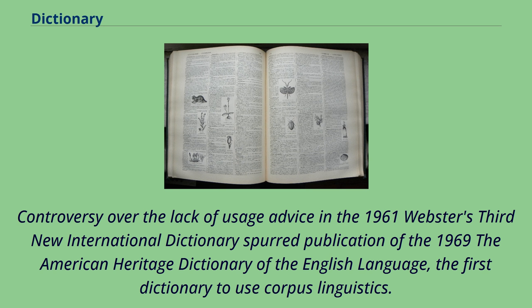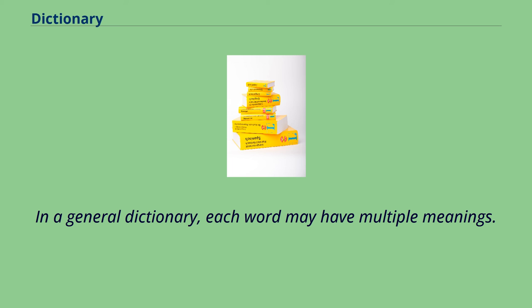Merriam-Webster was acquired by Encyclopedia Britannica in 1964. Controversy over the lack of usage advice in the 1961 Webster's Third New International Dictionary spurred publication of the 1969 American Heritage Dictionary of the English Language, the first dictionary to use corpus linguistics.